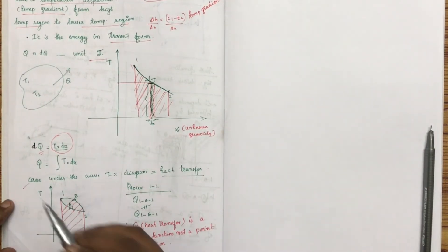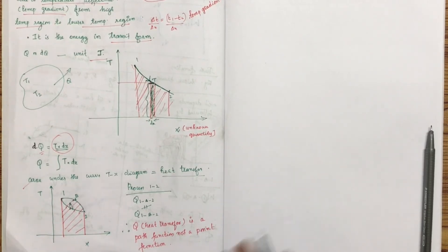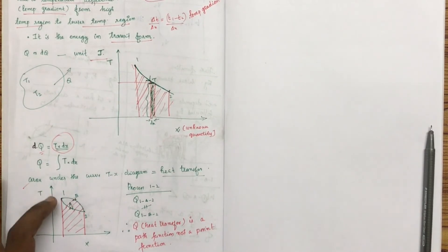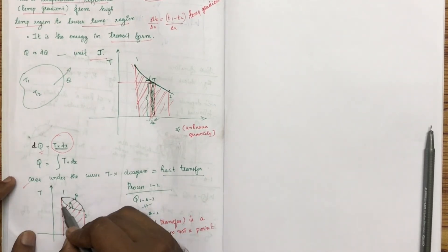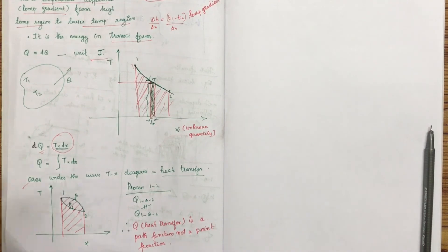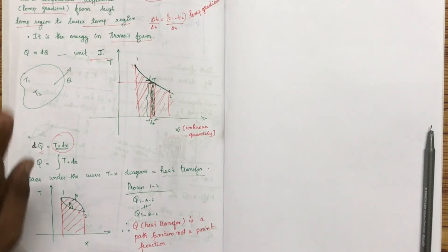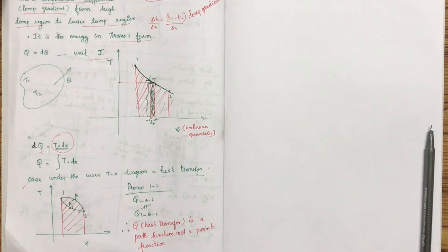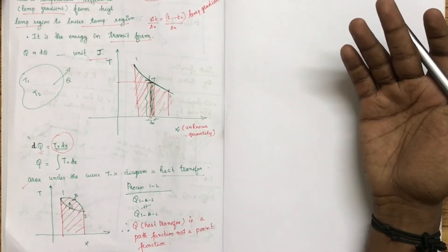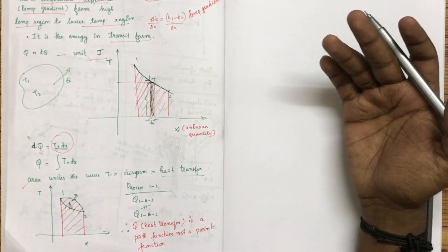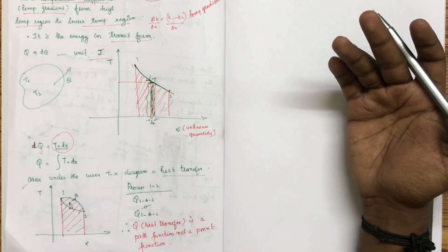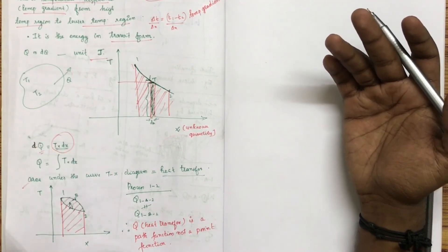The area under the T-S curve gives the heat transfer. Whenever the path changes, the area under the curve also changes. Therefore, heat depends upon the path of the system. The path function is not a property of the system — heat is a path function and path functions are not properties.